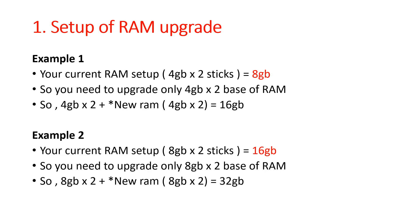Number one: setup of RAM upgrade. For example, your current setup is 4GB times two sticks, which is 8GB. If you bought a prebuilt computer and it comes with 8GB of RAM, sometimes it's one stick of 8GB — that's good, you can upgrade more. But sometimes it's two sticks of 4GB times two. So you'd upgrade with another 4GB times two, bringing you up to 16GB total.